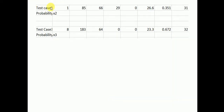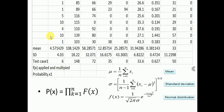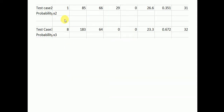The same process is repeated for test 2 and test 3. Probability is calculated by computing f(x) for each column value — for example, 1, 85, 66, and so on — then all column f(x) values are multiplied together to get the class probability for each test case.